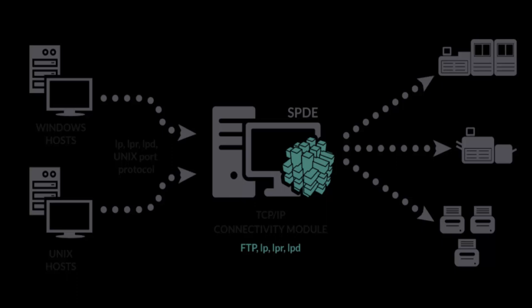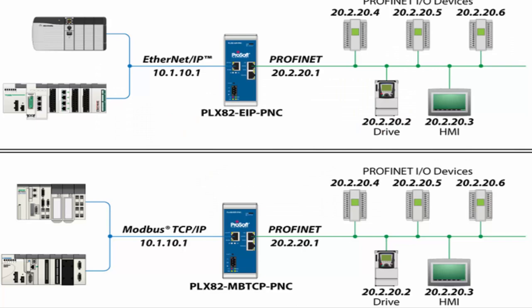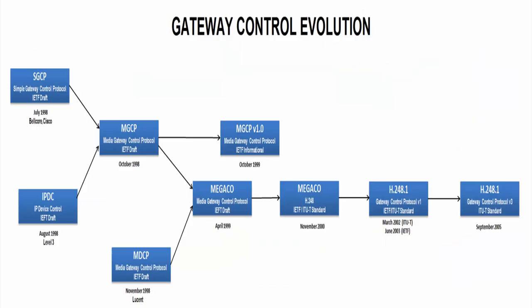Being stateless frees up network paths so they can be used continuously. The transport layer itself, however, is stateful — it transmits a single message and its connection remains in place until all the packets in that same message have been received and reassembled at the destination. The TCP/IP model differs slightly from the seven-layer Open Systems Interconnection networking model, which defines how applications can communicate over a network.